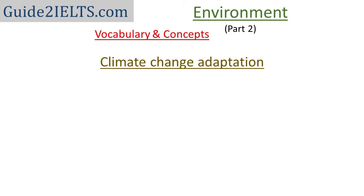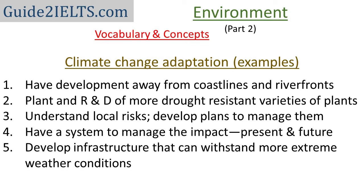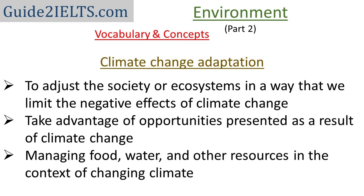Now let's move to climate change adaptation. It means adjusting society or ecosystems in a way that limits the negative effects of climate change and also takes advantage of opportunities provided by climate change. Adaptation can take many forms: development away from coastlines and riverfronts; planting drought-resistant crops and R&D for such crops; understanding local risks and developing plans to manage them. It also includes diversifying crops to accommodate changing climatic conditions, developing infrastructure that can withstand more extreme weather, and managing food, water, and other natural resources in the context of a changing climate.